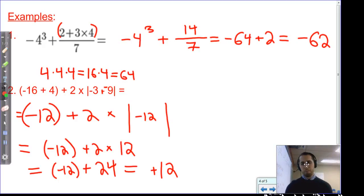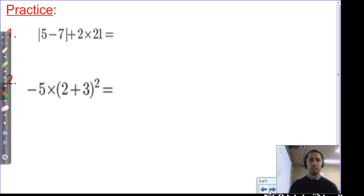I'm going to leave you with some practice problems, as always, to do on your own. So, get to work. That's the absolute value of 5 minus 7, plus 2 times 21. And then the second problem is negative 5 times the quantity of 2 plus 3 squared, or to the second power. Best of luck. I'll see you later.